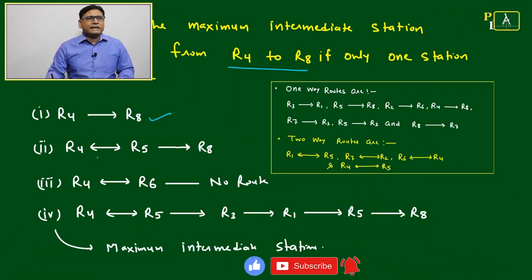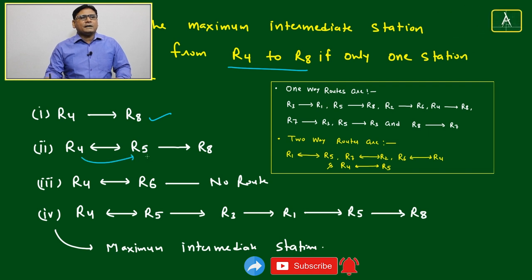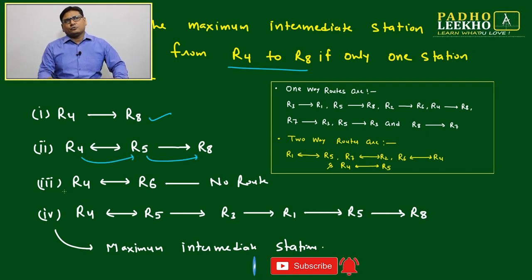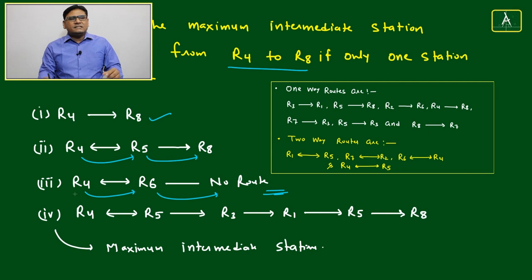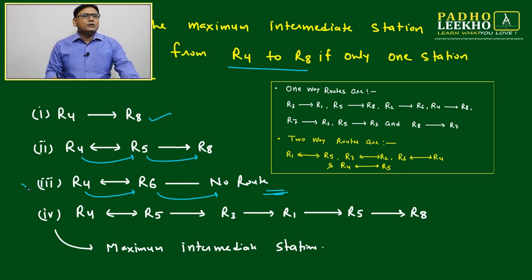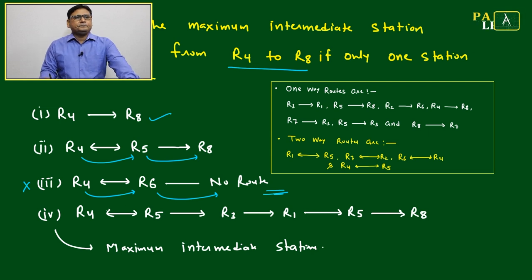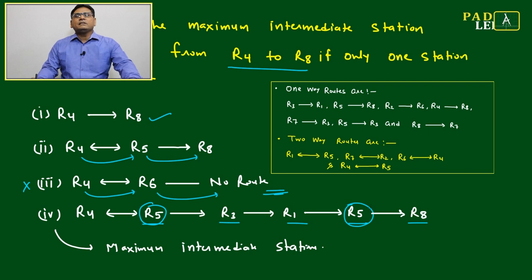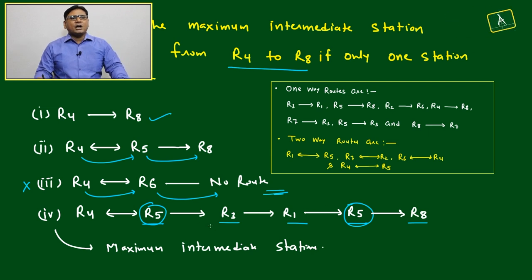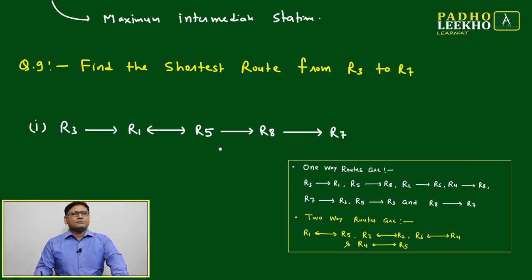Another route is R4 to R5, then R5 to R8 directly. From R4 to R6, there is no onward route toward R8, so that path is invalid. To maximize intermediate stations, take R4 → R5 → R3 → R1 → R5 → R8, where R5 is repeated exactly twice. This gives four intermediate stations, which is the maximum.